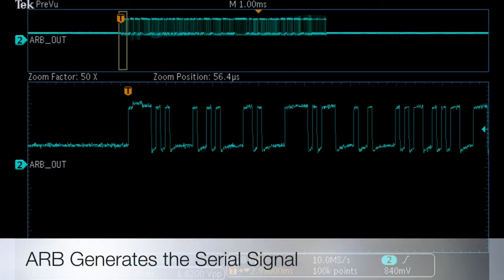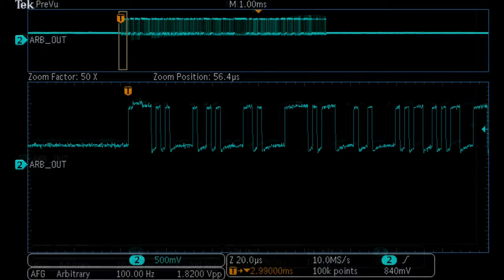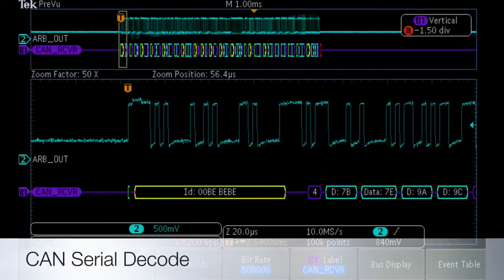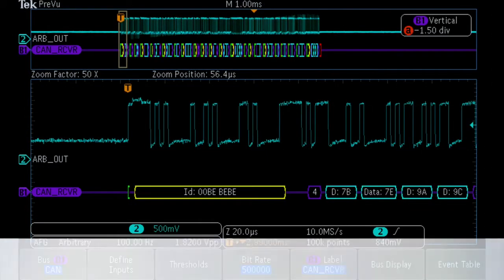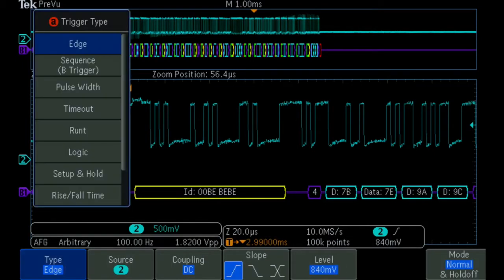Next, we probe the signal at the output of the serial receiver. By decoding the output of the receiver, we can determine when errors begin to occur in the system.